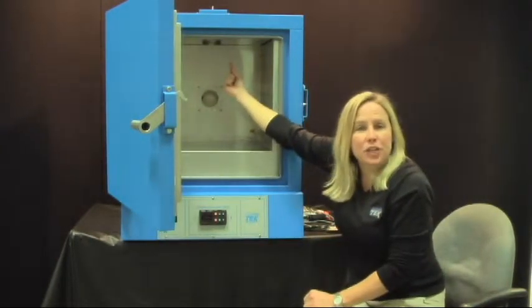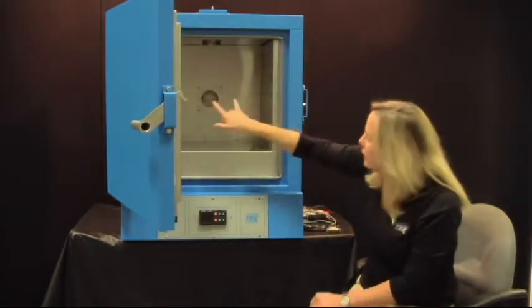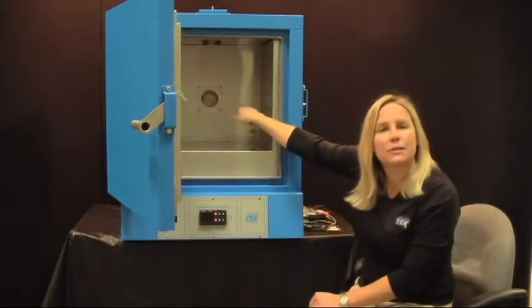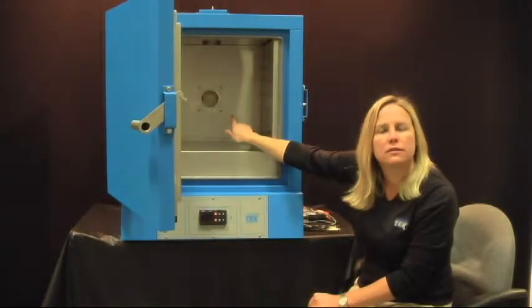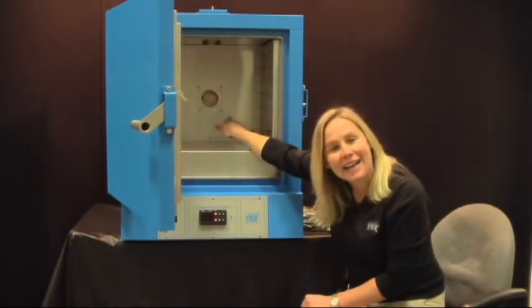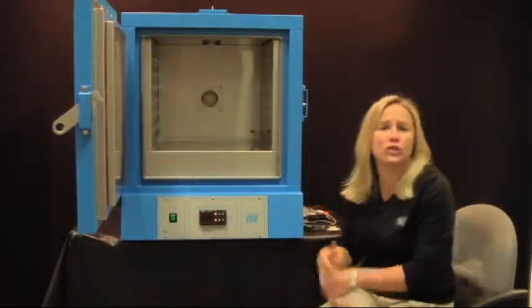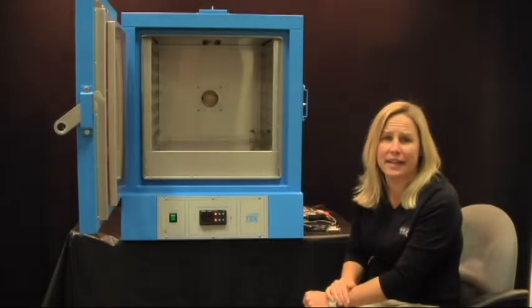The top exhaust port is adjustable. You can exhaust out the back. It also features an access port. Can you exhaust out the back? I'm sorry. Exhaust out the top. The access port in the back allows you to run thermocouple wires, power cords, things like that inside the oven.